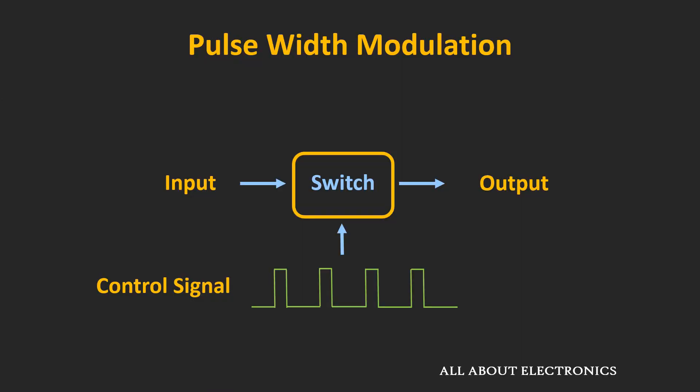In this pulse width modulation technique, by changing the pulse width of the control signal, the power which is delivered to the load is controlled. Let us understand what we mean by this by taking one example.